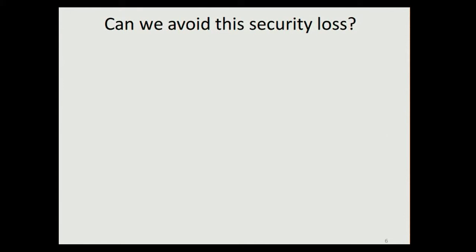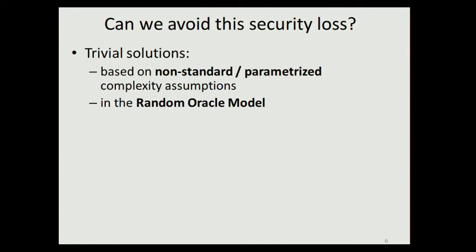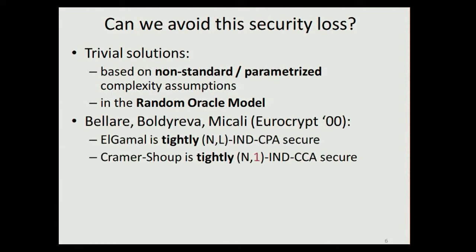The question is: can we avoid the security loss? There are some trivial solutions — we can use non-standard or parameterized assumptions like q-type assumptions, or assume directly that the scheme is secure in the (n,l) multi-user sense, but this is a bit of cheating. Another way is to use the random oracle model. A second answer was given by Bellare, Boldyreva, and Micali, who showed examples like ElGamal which is (n,l)-IND-CPA secure, and Cramer-Shoup which is (n,1)-IND-CCA secure — scaling well in the number of public keys but not in the number of ciphertexts per key.